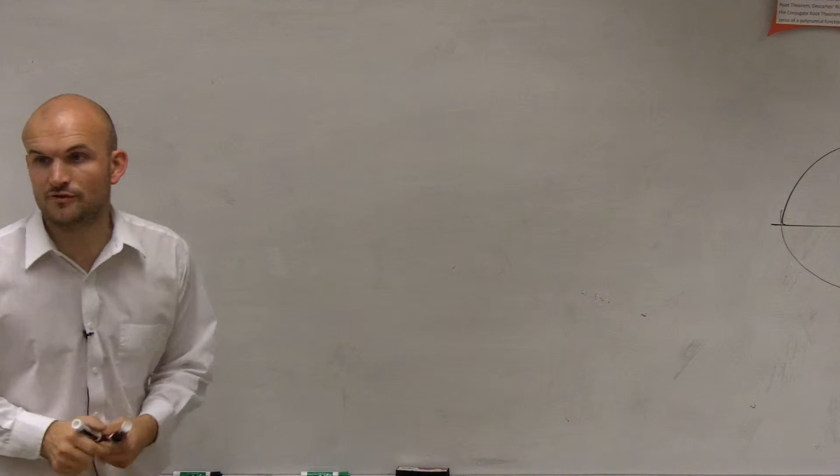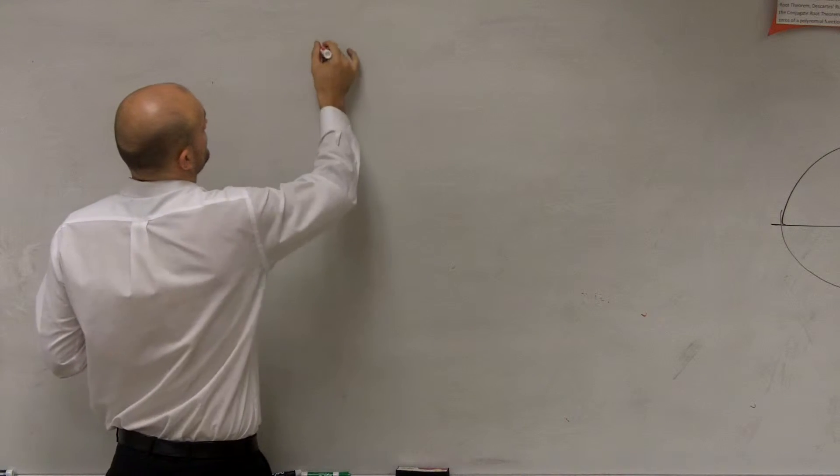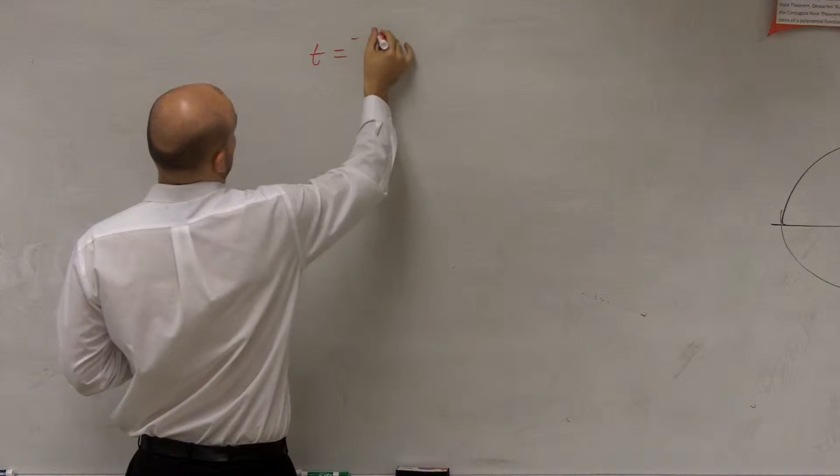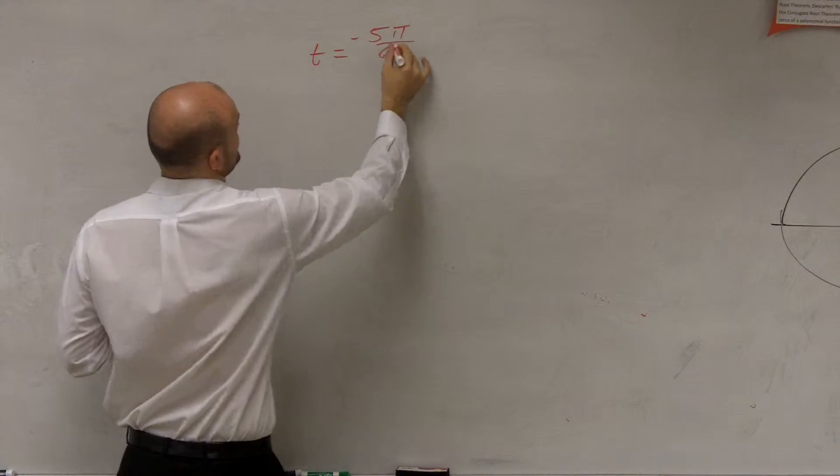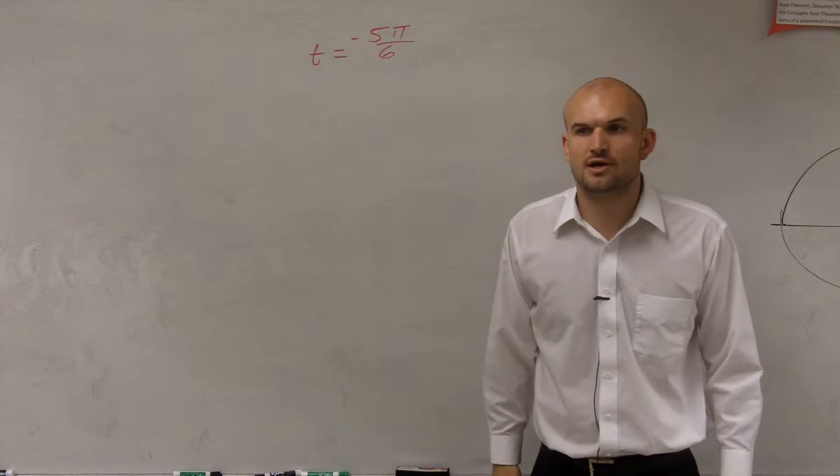So ladies and gentlemen, what we want to do for this problem is figure out, I'm actually going to use red here, t equals negative 5 pi over 6. And the question asks us to evaluate all six trig functions.